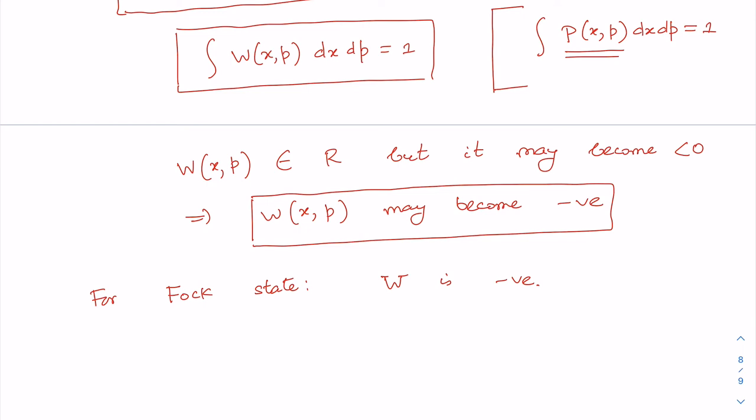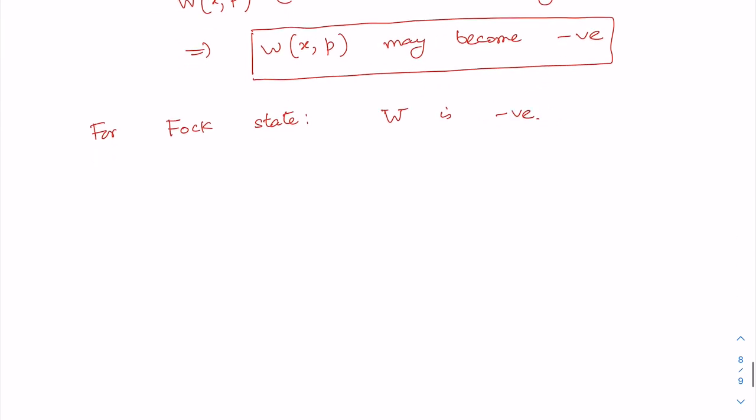To give an example, the Fock state or number state has a Wigner distribution function that is found to be negative, and we don't have any classical counterpart of the Fock state or number state.